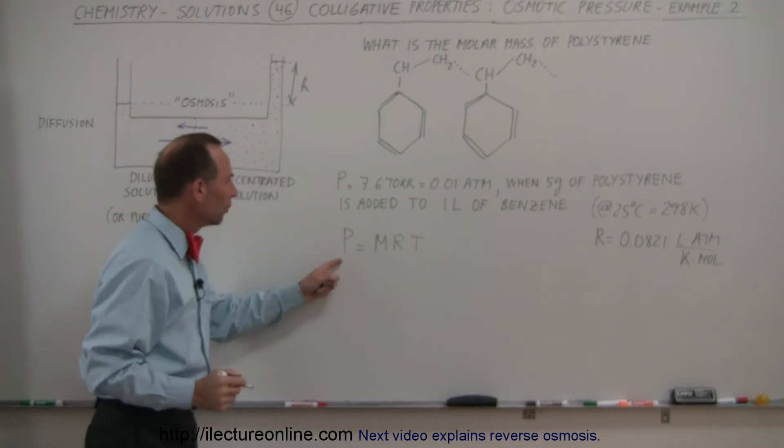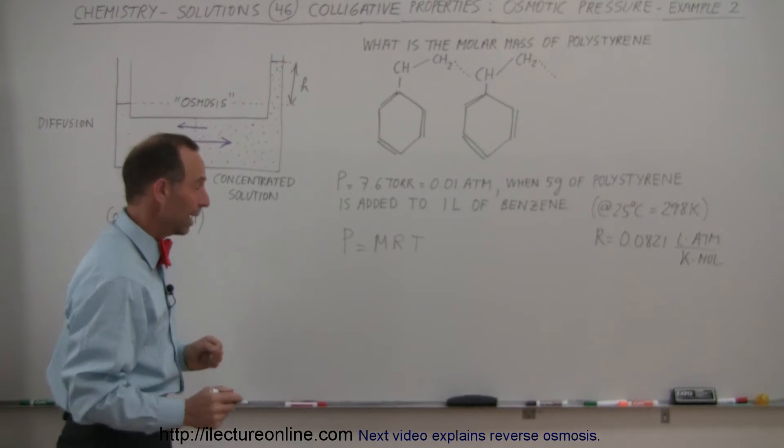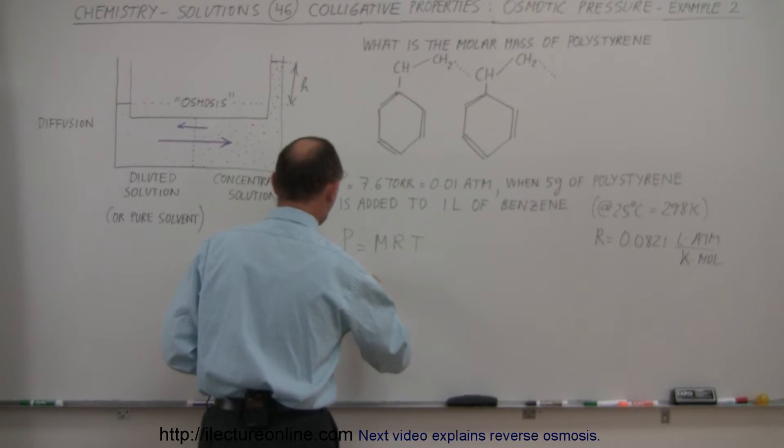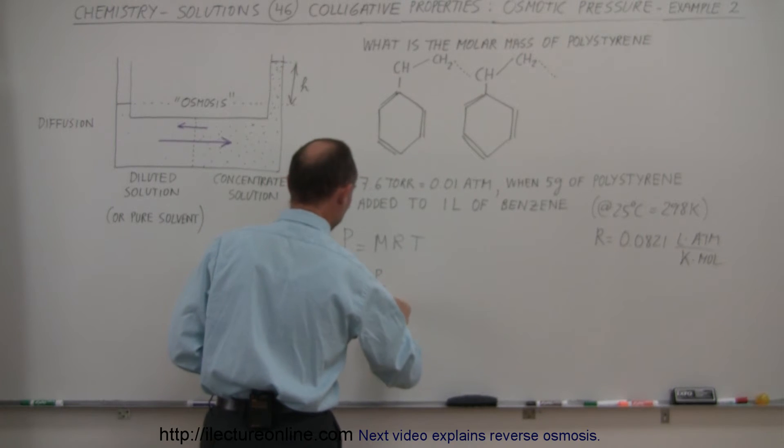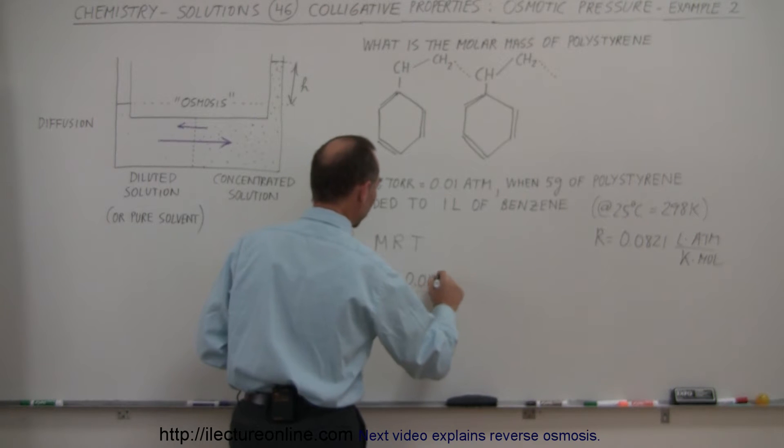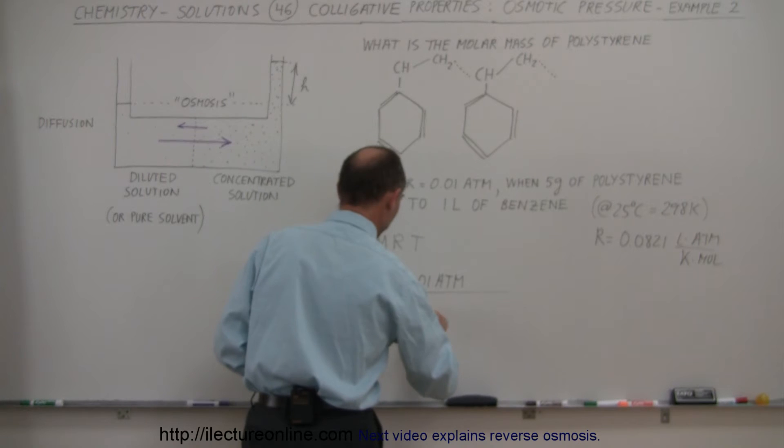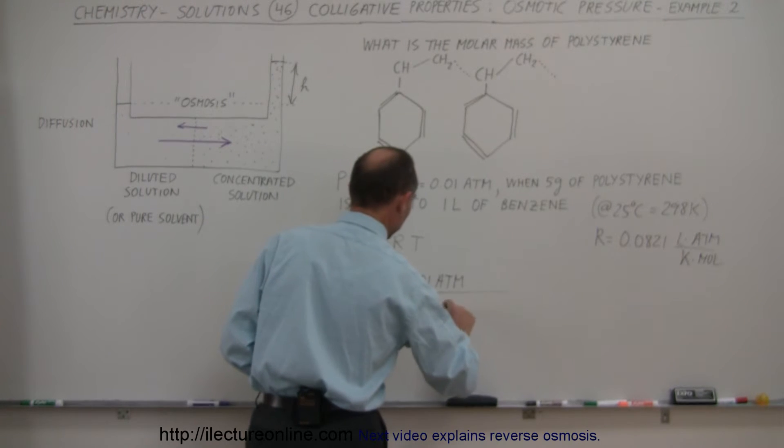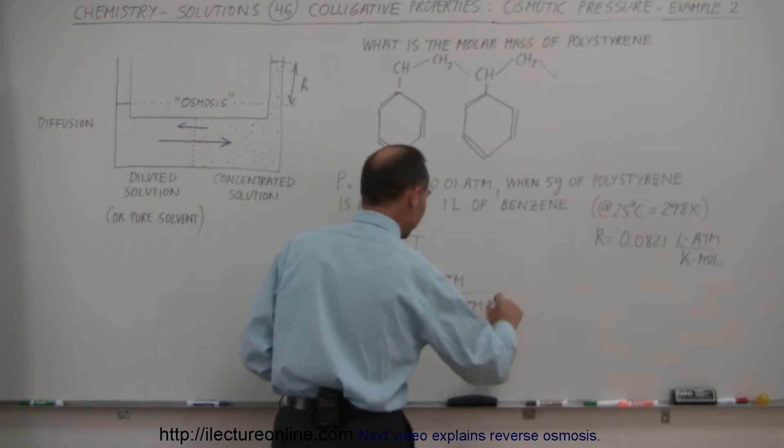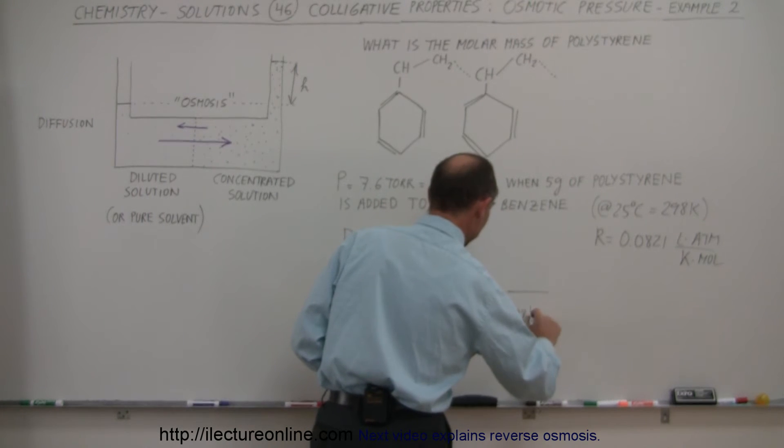Alright, so, since we know the pressure, we know R and T, we need to find M. M would be the molarity. So, molarity equals the pressure divided by RT and let's plug in some numbers. For the pressure, we get 0.01 atmospheres because we do have to put everything in terms of atmospheres. R is going to be 0.0821 liter times atmospheres divided by Kelvin times moles. And multiply times the temperature of 298 Kelvin.